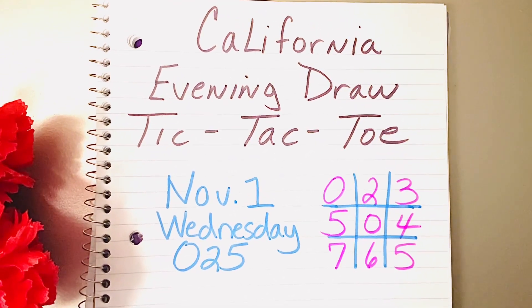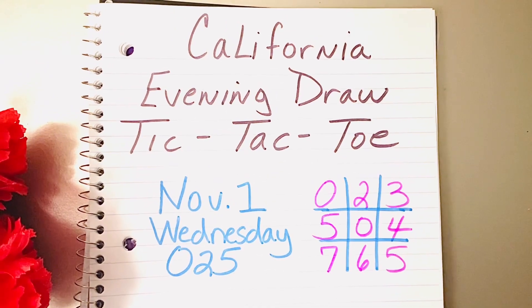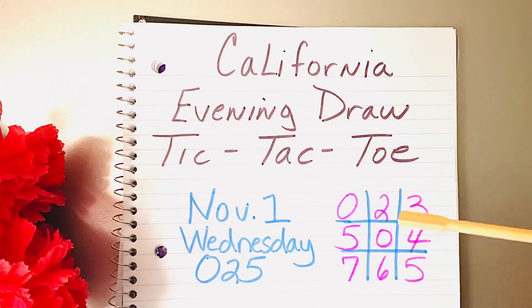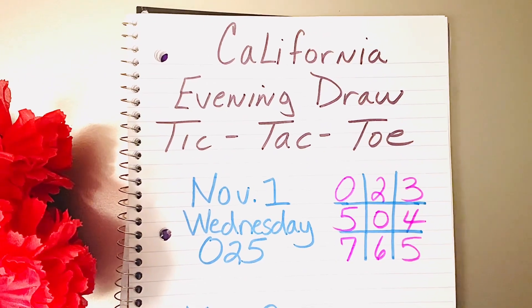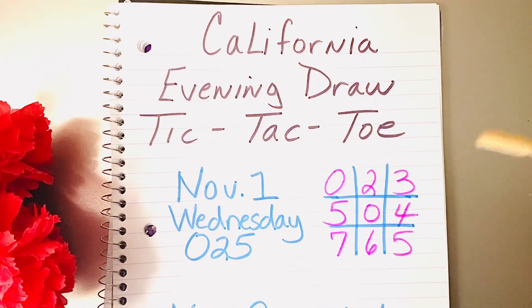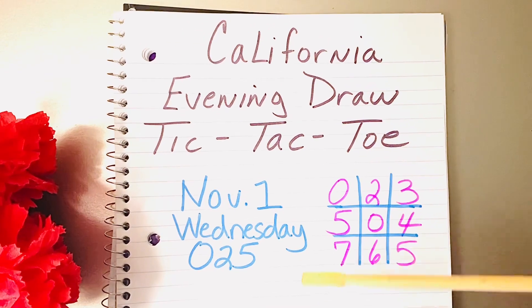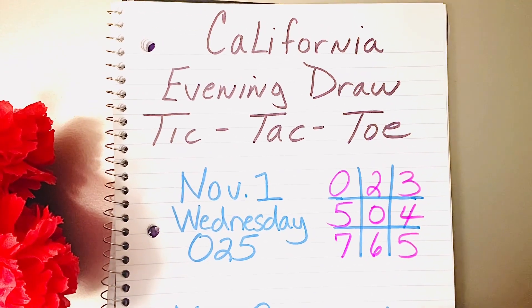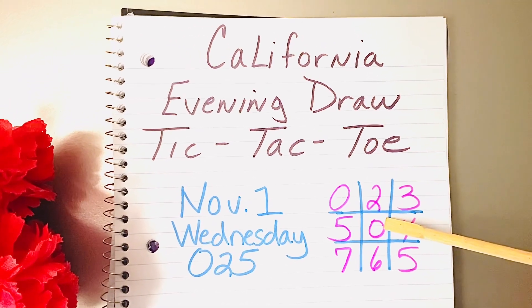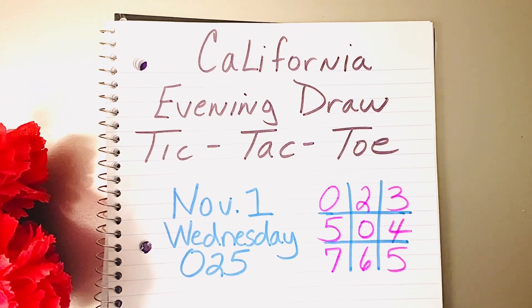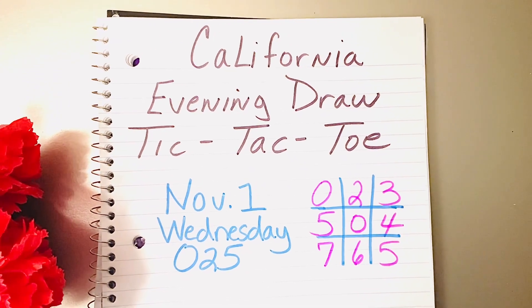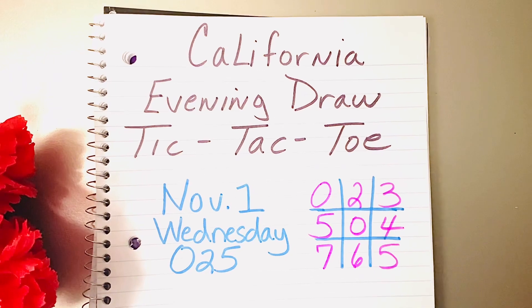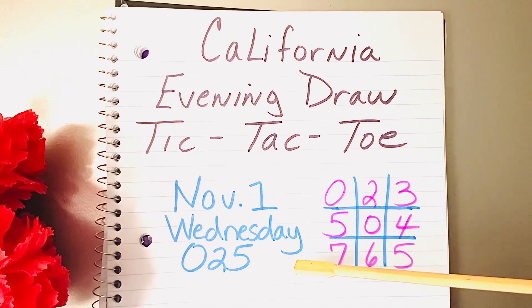So now with my California example, this method has worked the last few days. But I want to see if this tic-tac-toe method works for the next day. So November 1st, I did put in 025, that's the winning Wednesday number, in that grid. And I want to see for November 2nd, Thursday, would that number show up in that grid.